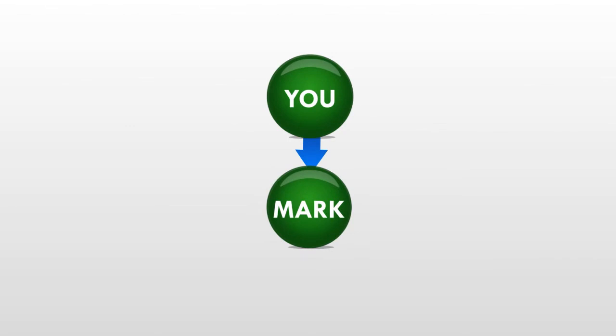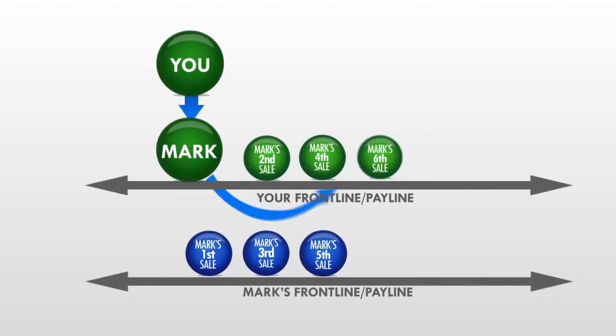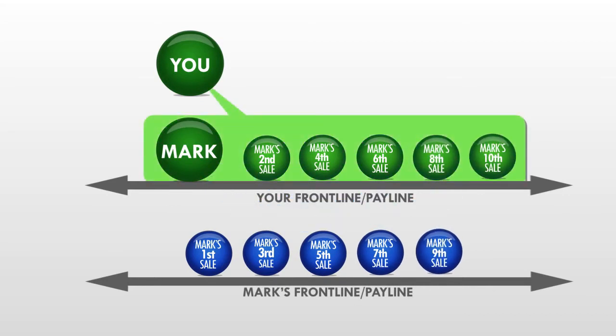Suppose all you did was just refer one person. Let's call this person Mark. As Mark starts making sales, his even numbered sales all roll to your pay line. In other words, his second, his fourth, sixth, eighth, and tenth sale all roll up to your pay line. And you're making $20 a month on all of them.